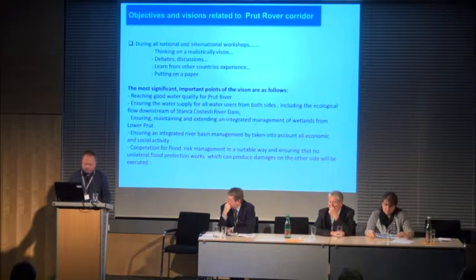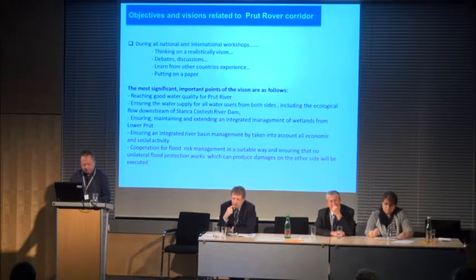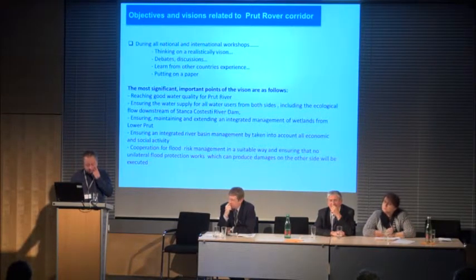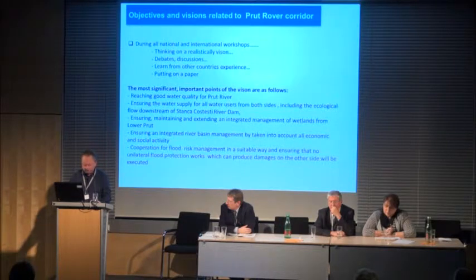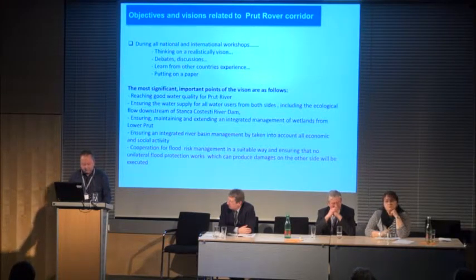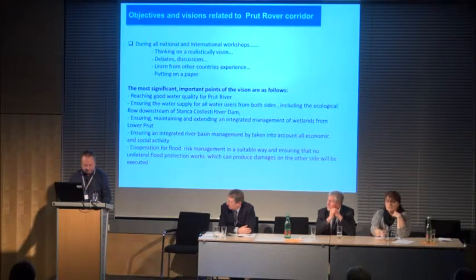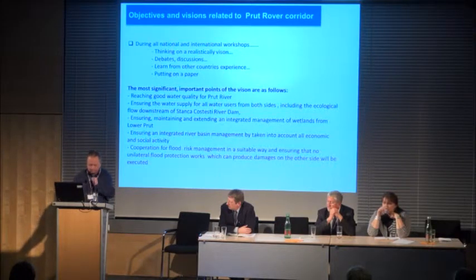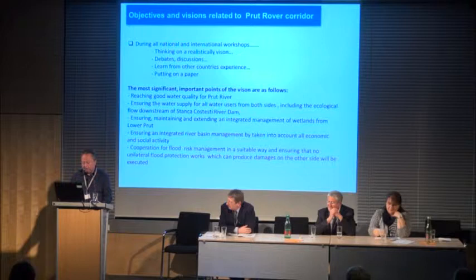The most significant objectives we obtained include reaching good water quality for the Prut, water supply for users from both sides — there is currently a problem with water supply in Moldova in the lower Prut — ensuring and maintaining integrated management of wetlands, ensuring integrated river basin management taking into account all economic and social activity, and lastly, cooperation in the field of flood risk management, ensuring that no unilateral flood protection works which can cause damage on the other side will be executed.